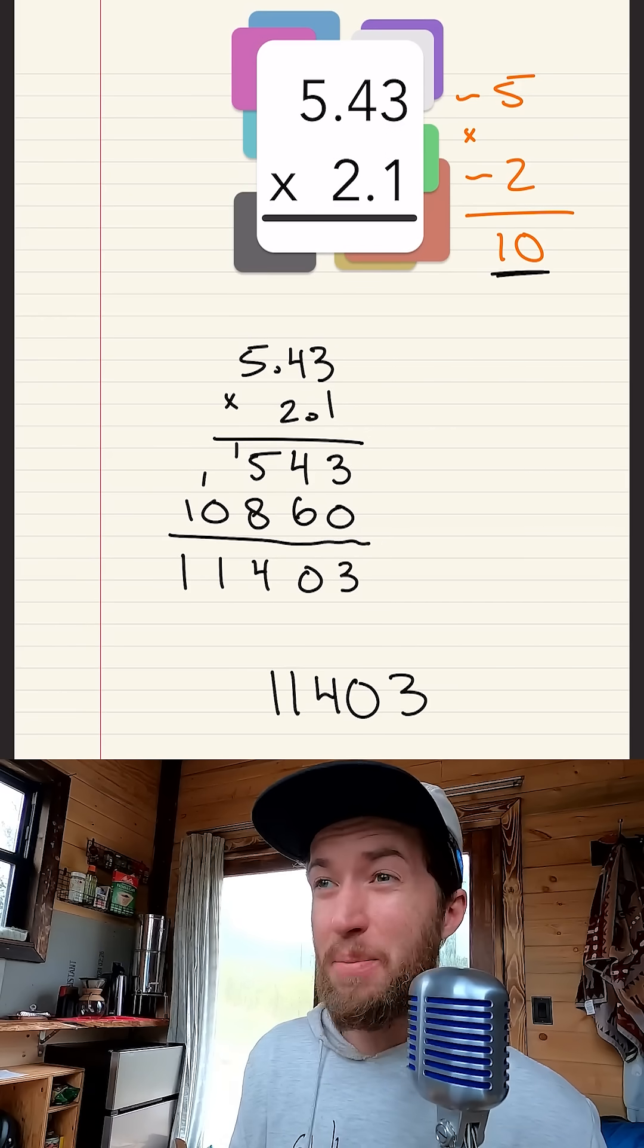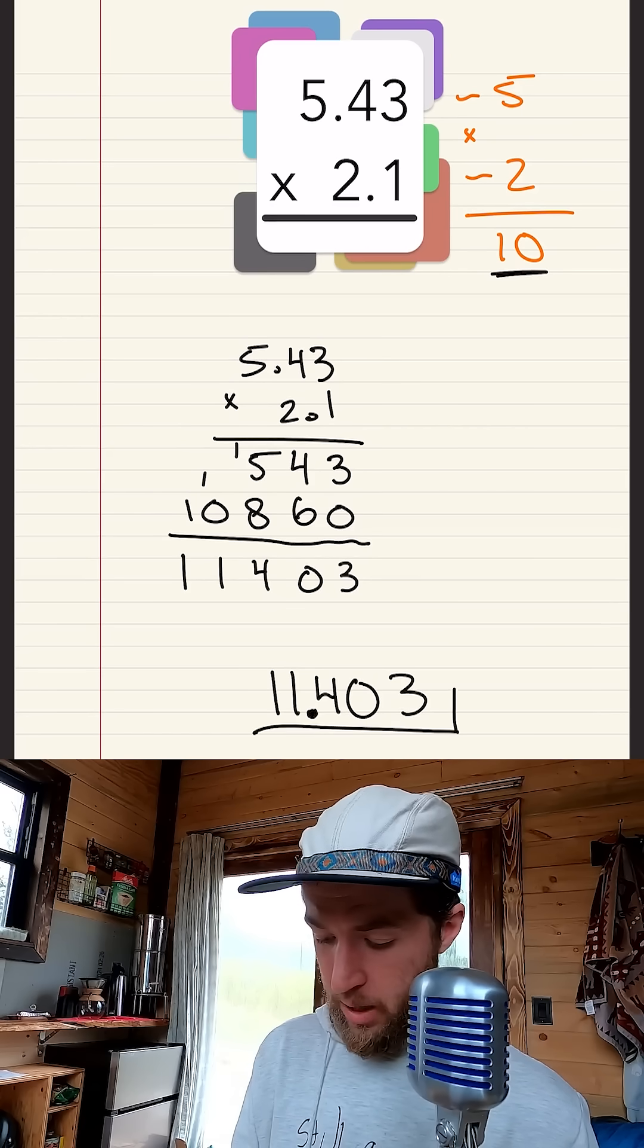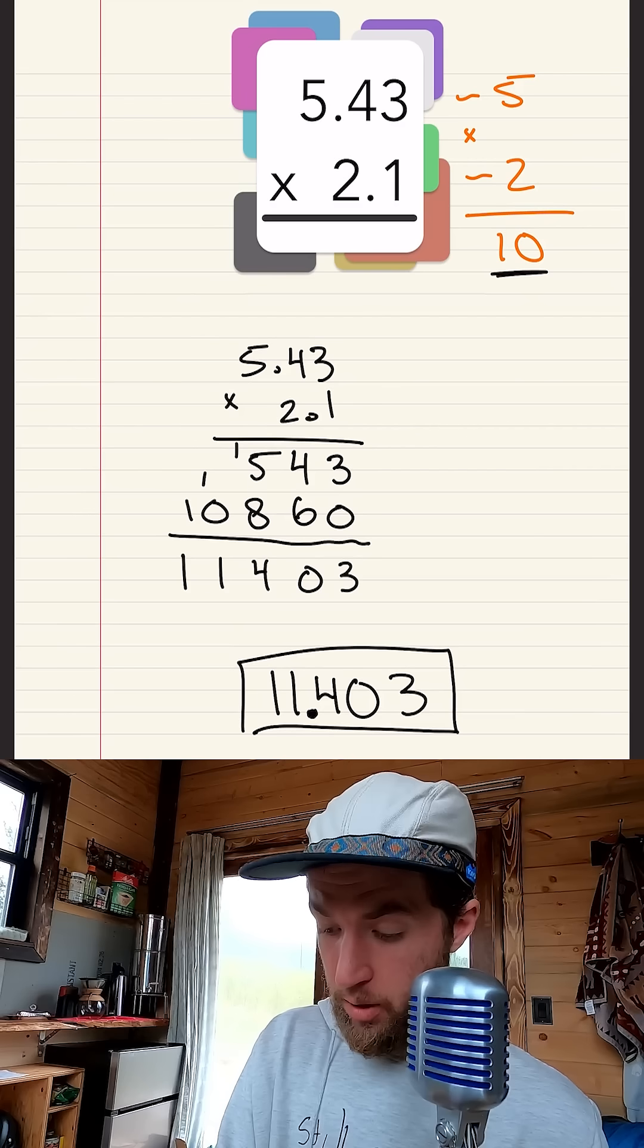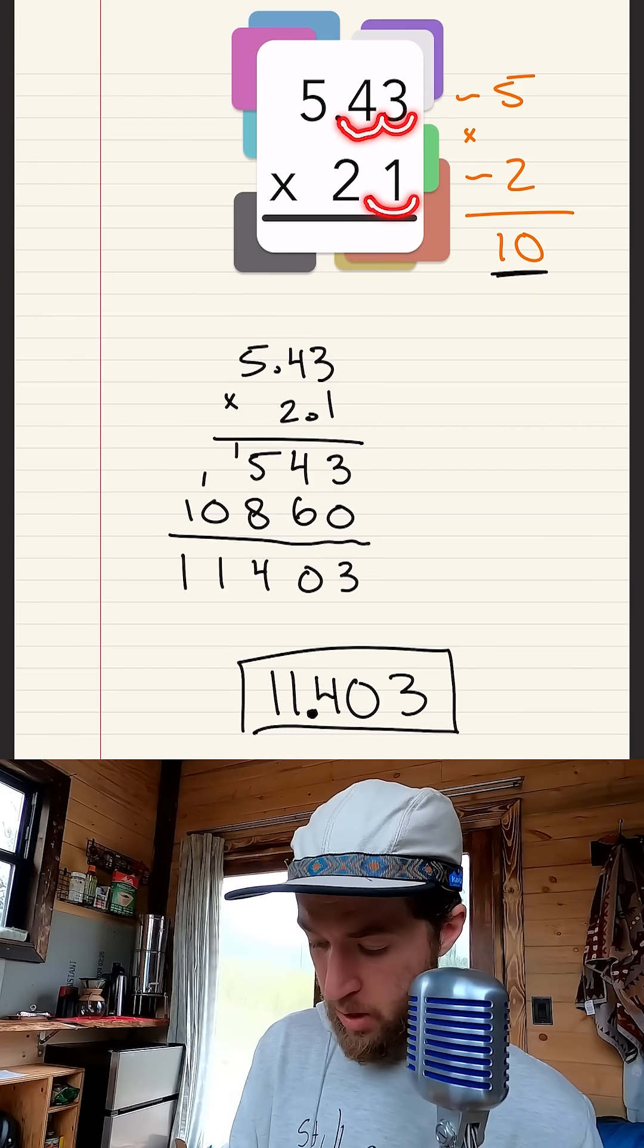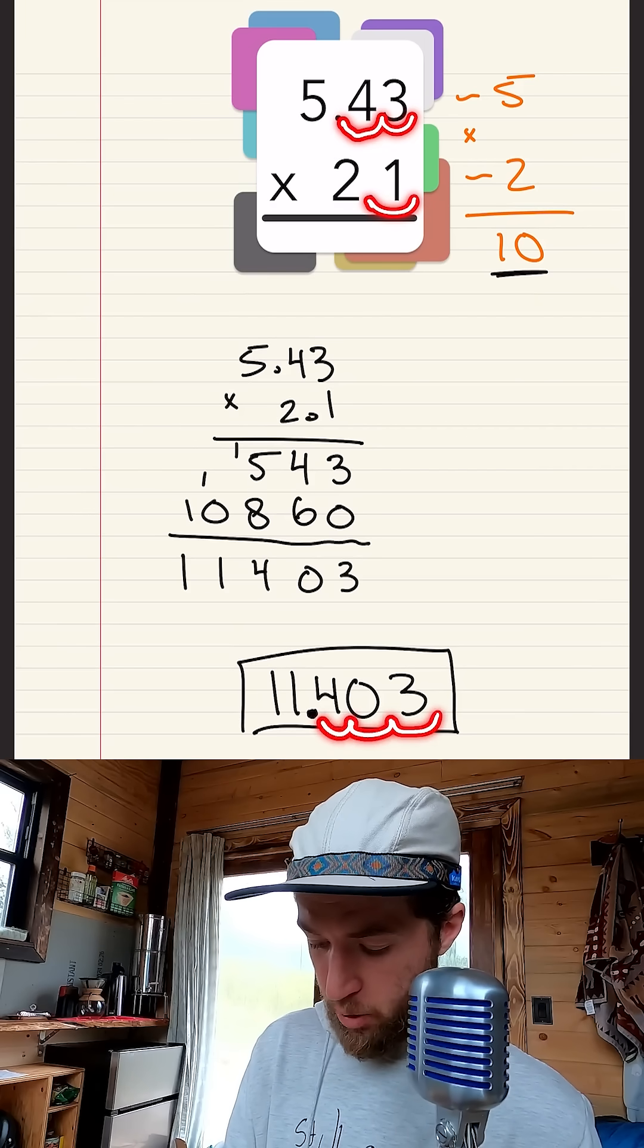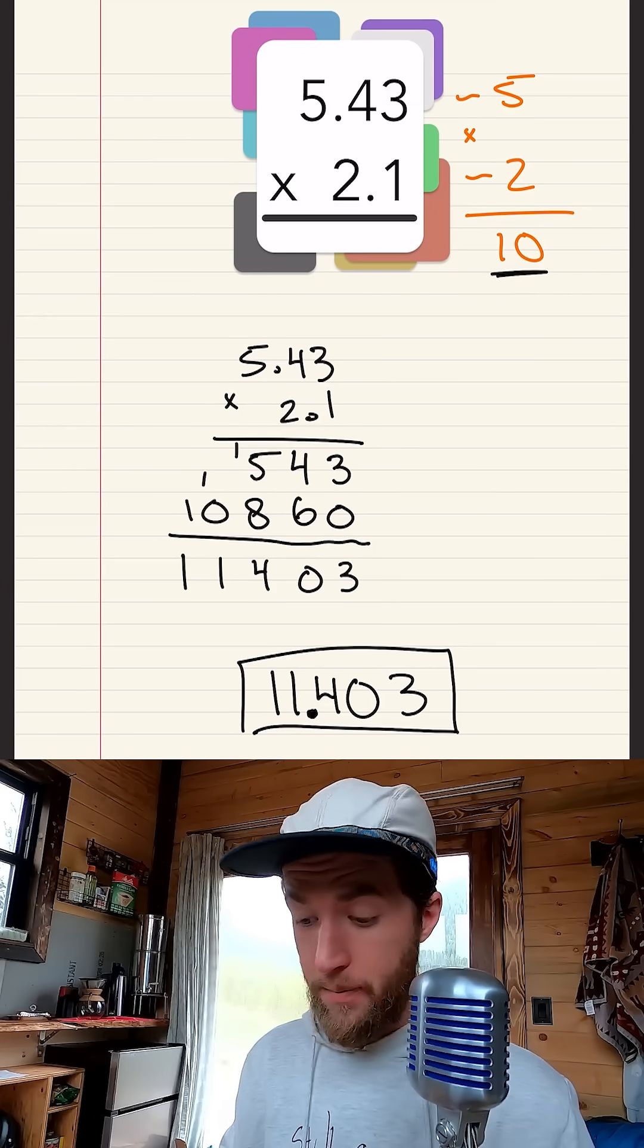So 11.403. And if you just want to double check it to be absolutely sure, we move that decimal one, two, three total places, one, two, three total places. But the estimate, the estimate's the secret. That's how to get your decimals right every single time.